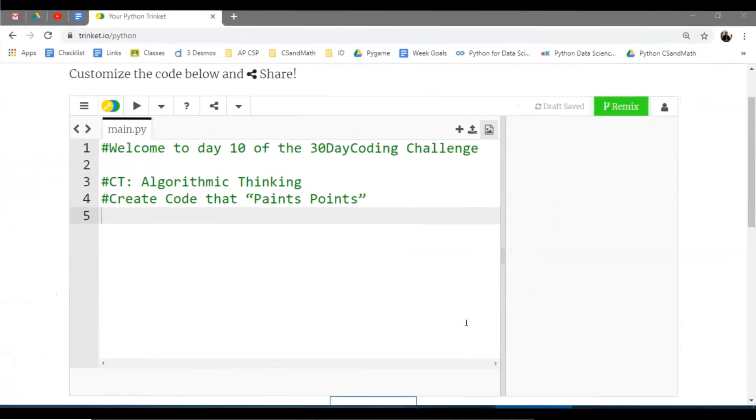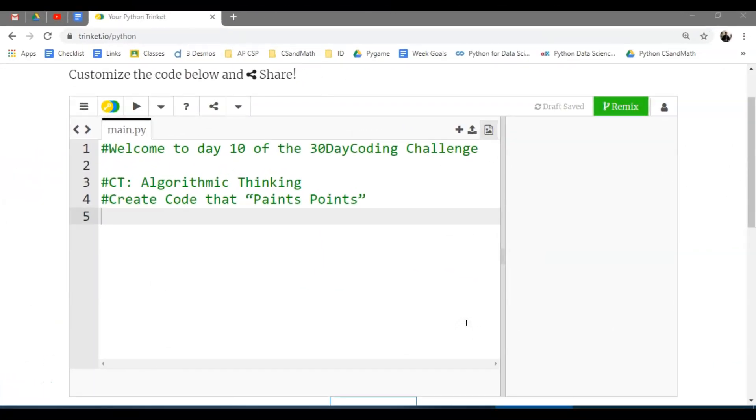Hello and welcome to day 10 of the 30 day coding challenge from CS and Math. We're finally going to get to graphing the equation in our graphing calculator. CT is an abbreviation for computational thinking. This is one of the pillars I talked about called algorithmic thinking. We're going to focus on creating code or an algorithm that sweeps across and paints points.